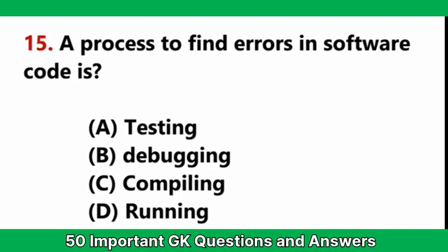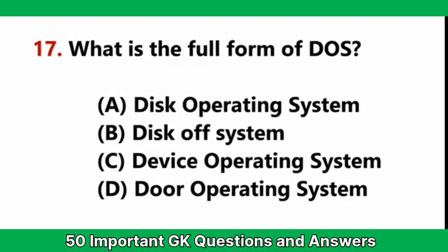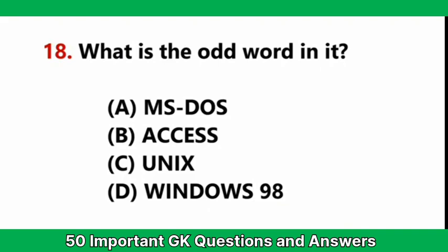A process to find errors in software code is — Answer B: debugging. What is the physical structure of a computer called? — Answer B: hardware. What is the full form of DOS? — Answer A: Disk Operating System. What is the odd word in IT? — Answer B: Access.